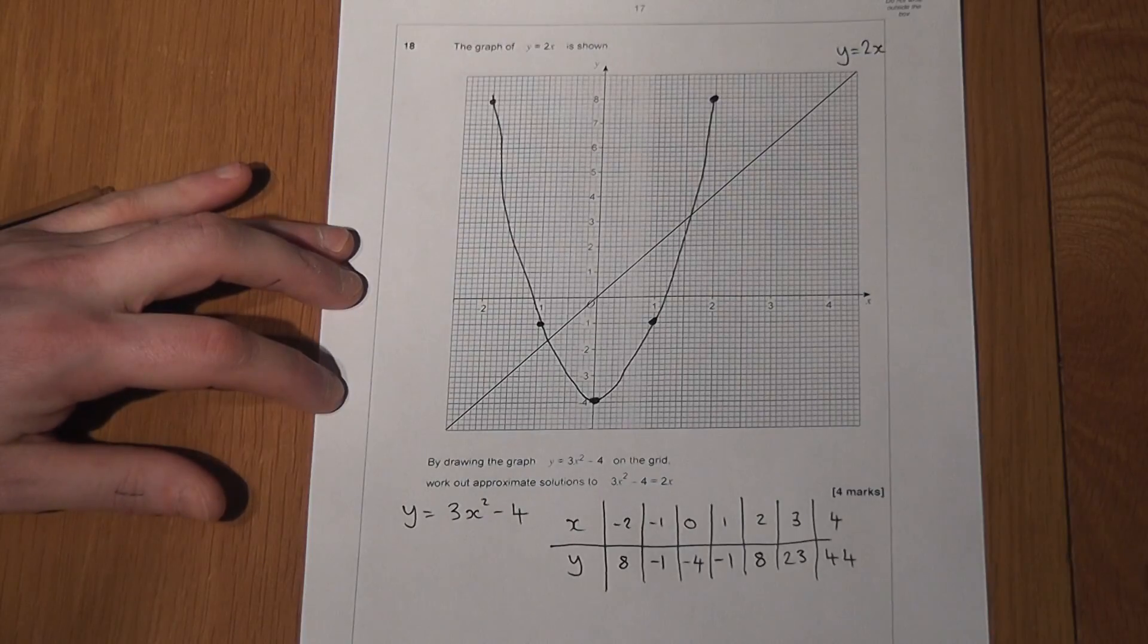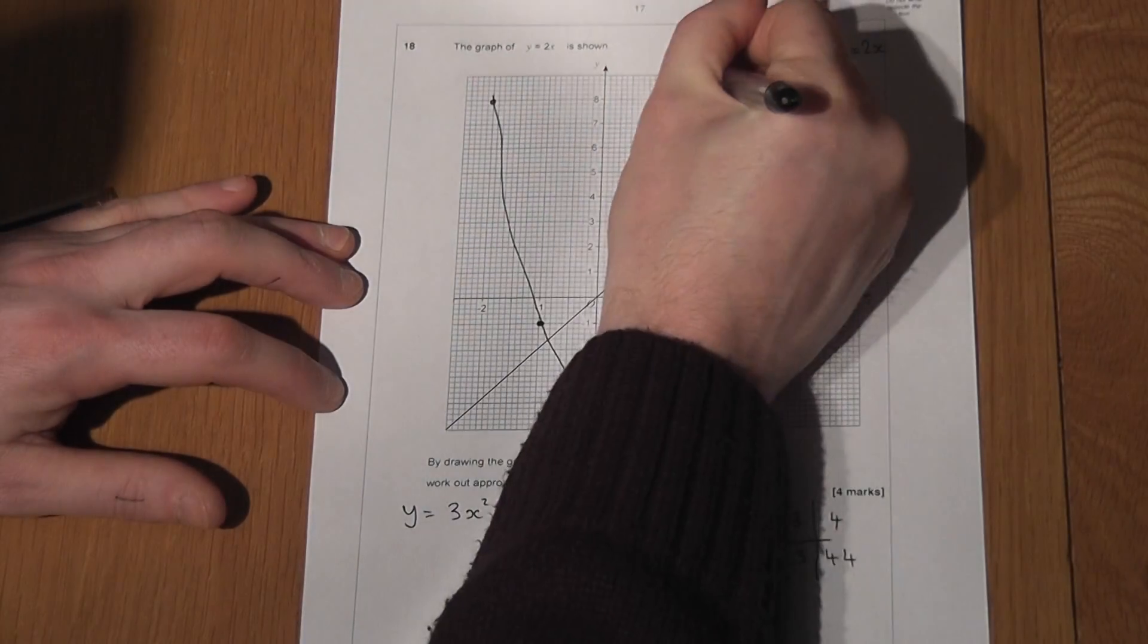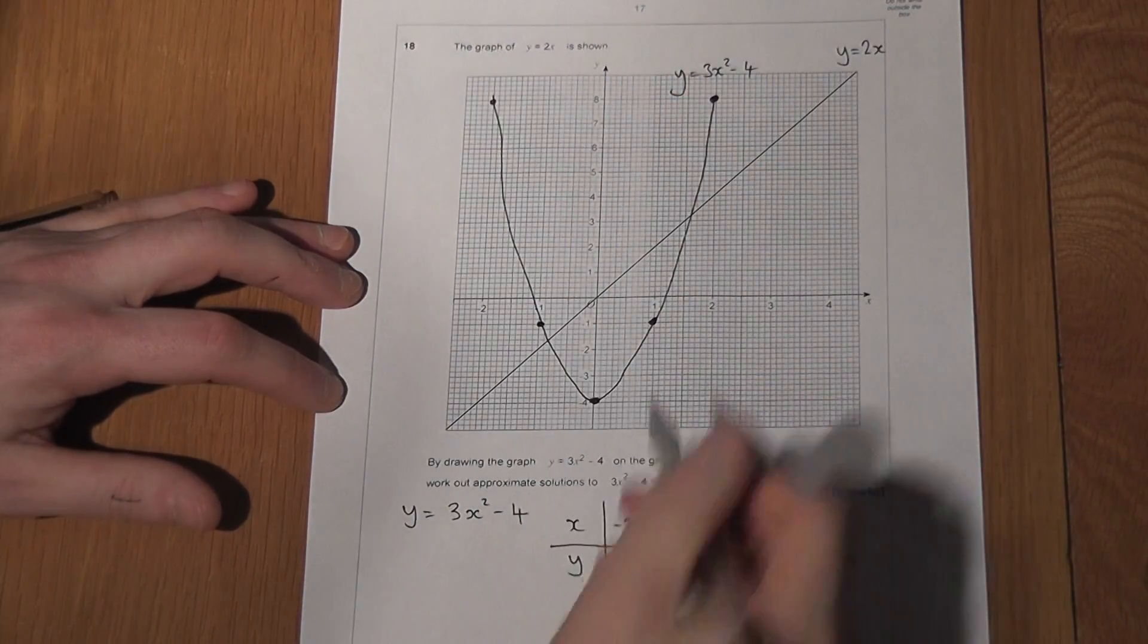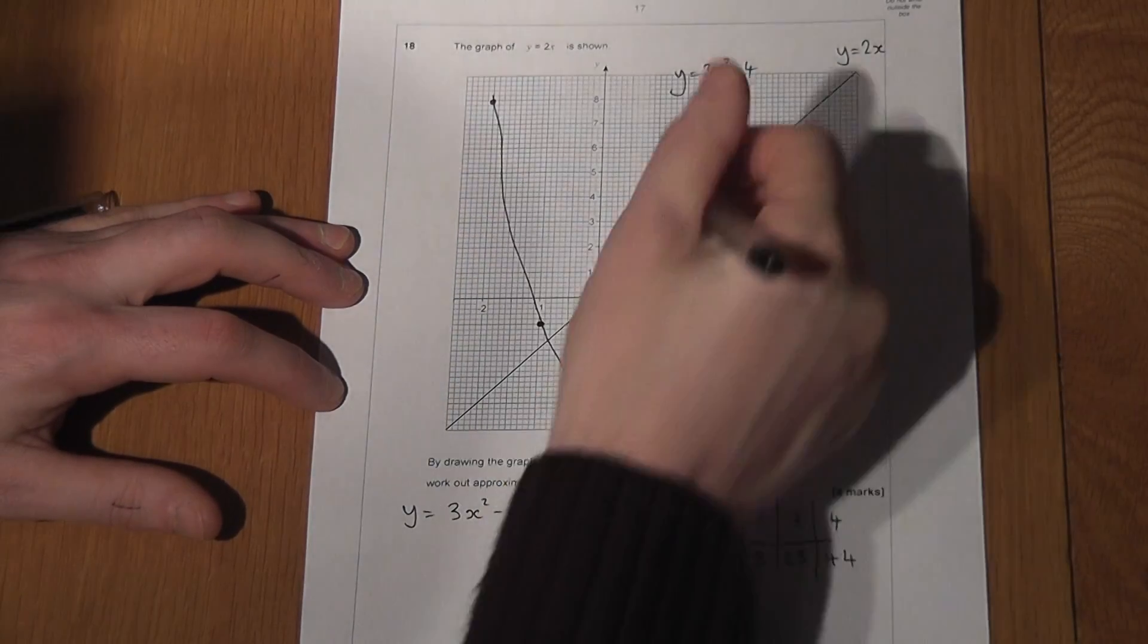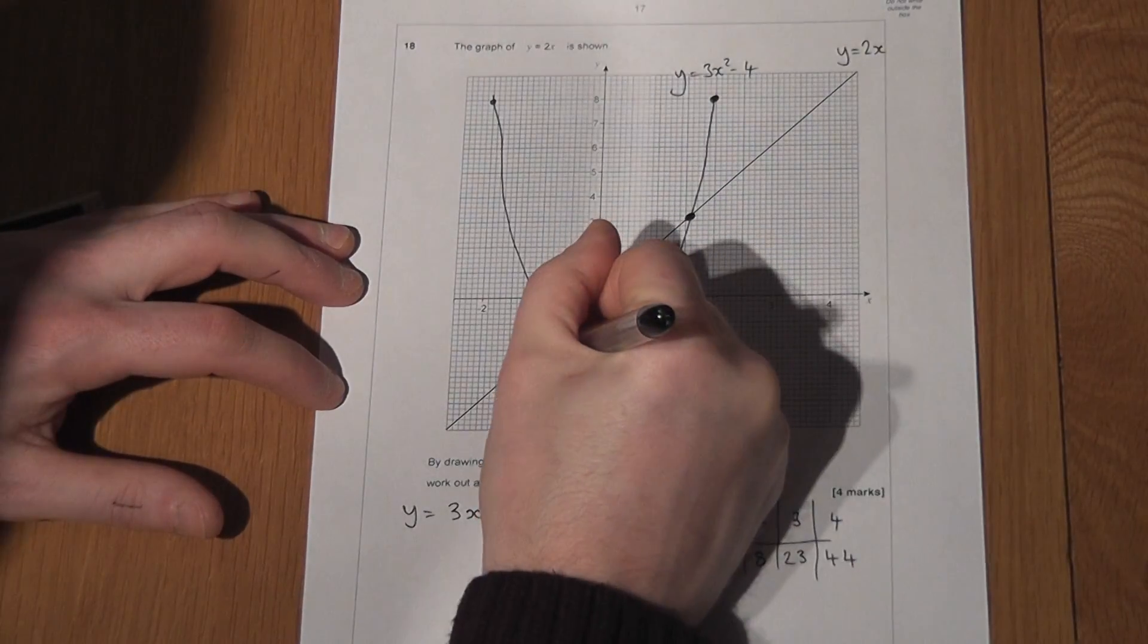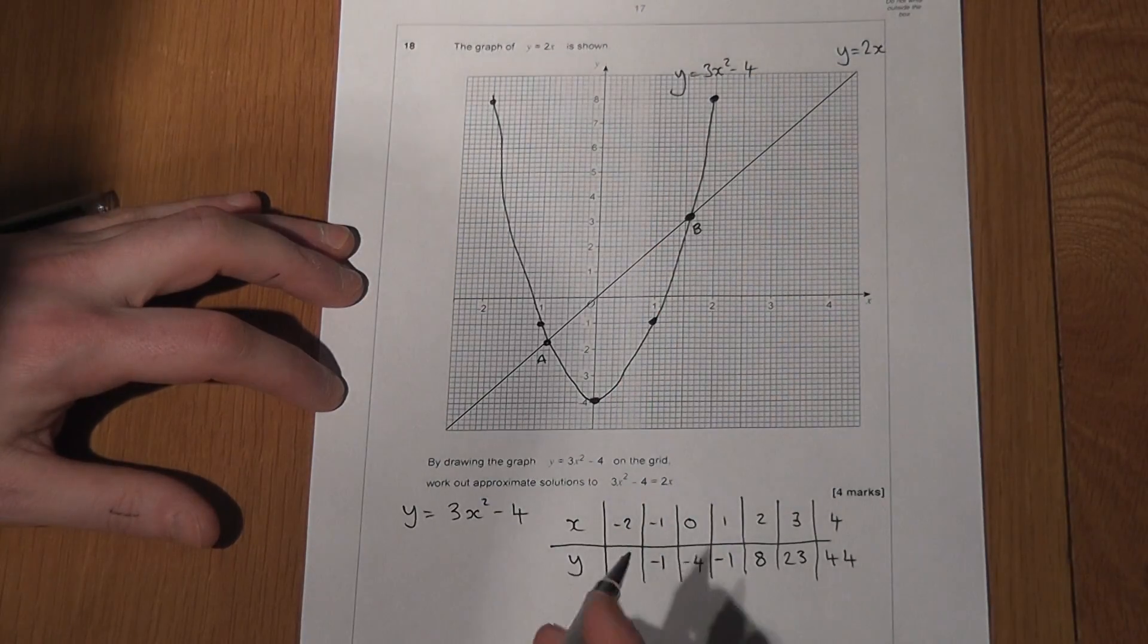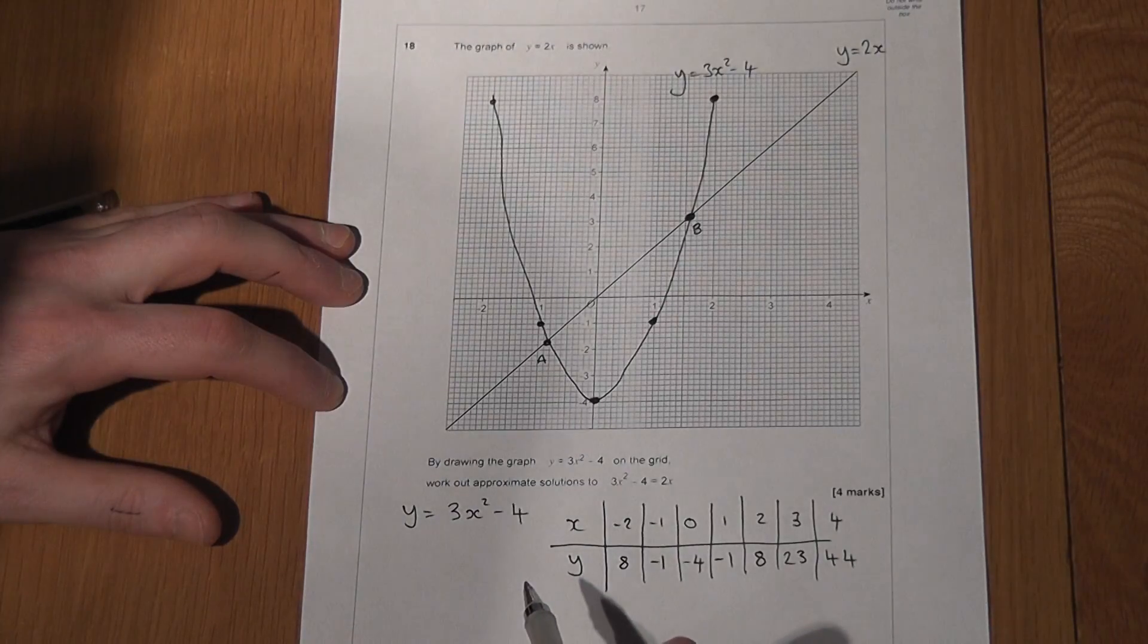Now, this question asked us to use the graph to solve 3x squared minus 4, which was my curve, is equal to 2x, which was the line. And the question is asking us basically to find where the curve and the line intersect. So I want to find out what these two values here are. What is the x-coordinate at these two values?